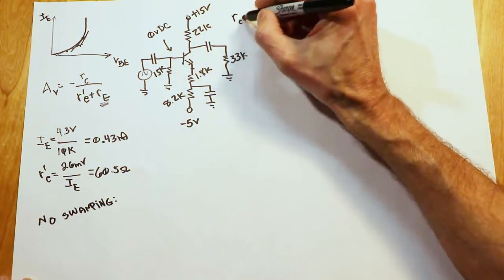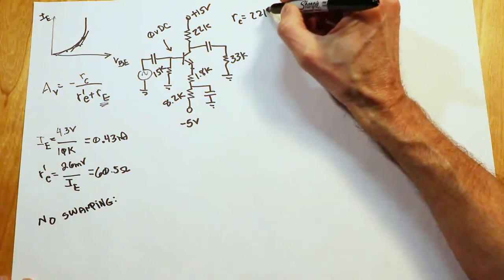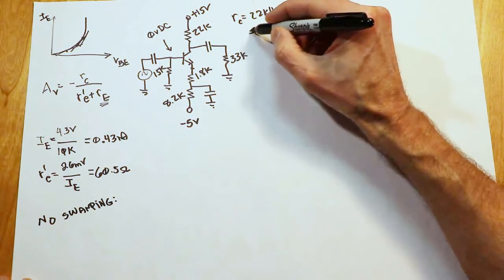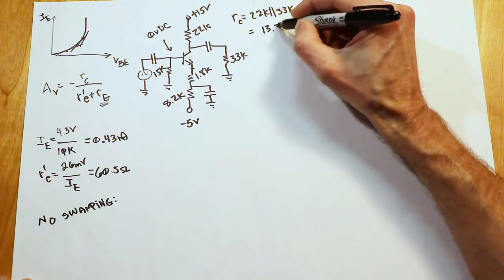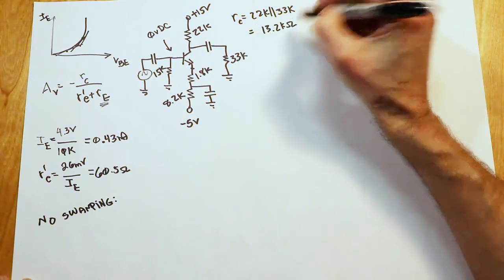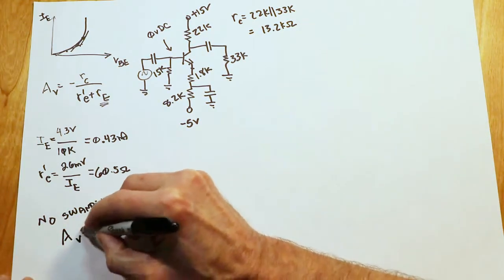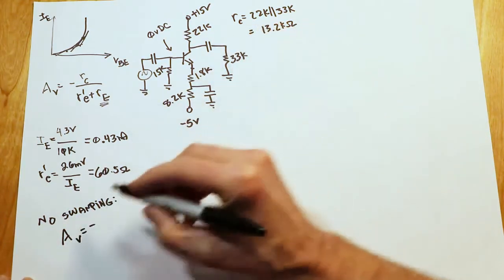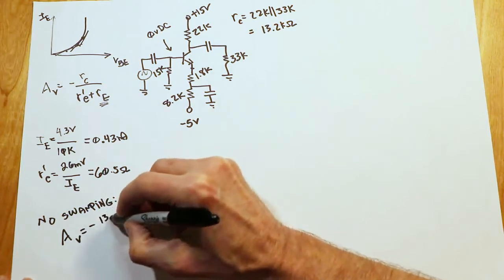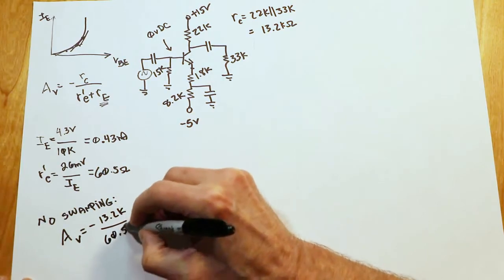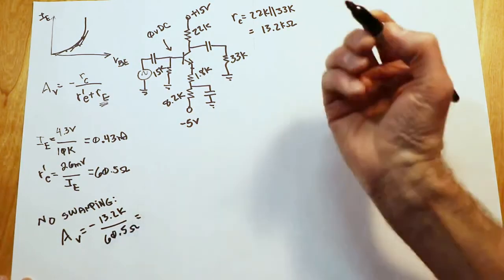Now, our RC value over here is going to be 22K in parallel with 33K. That's going to equal 13.2K. So my gain over here would be a negative RC 13.2K divided by the R'e of 60.5 ohms.